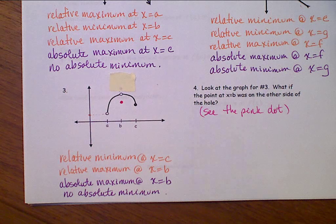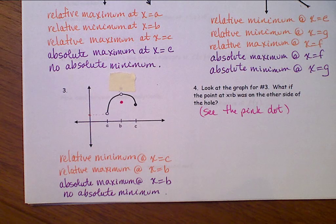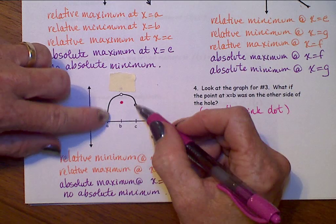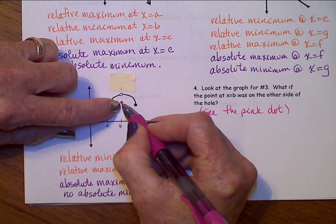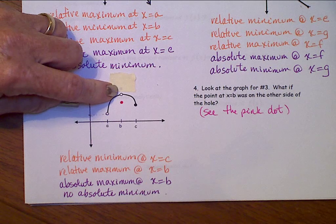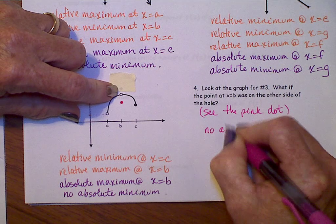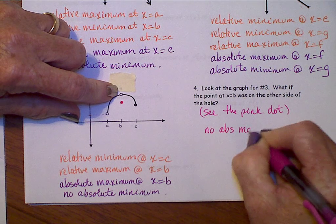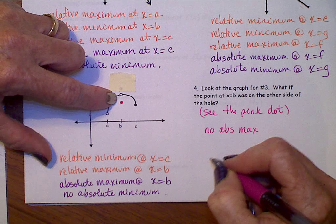So it's the pink dot that's right there. What changes? It's only at b, so we're not interested about anything that could be happening at c. About this point right here at b, it's no longer a maximum value. There is no absolute maximum.